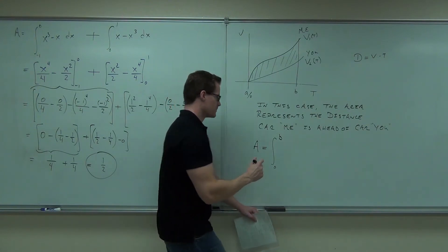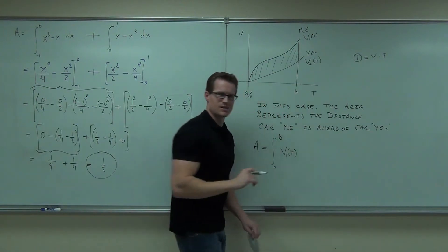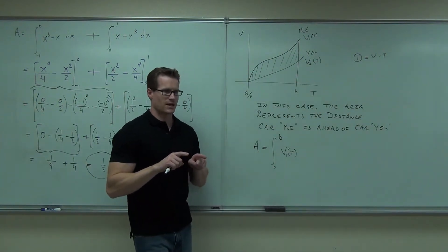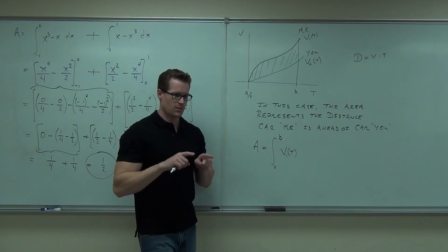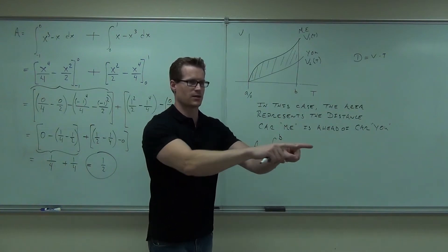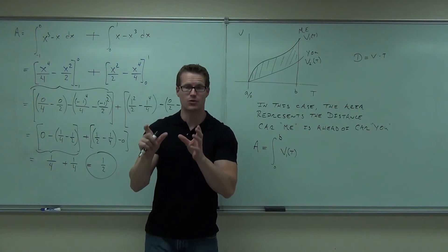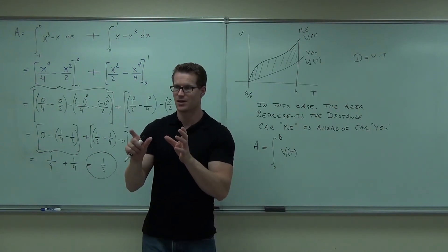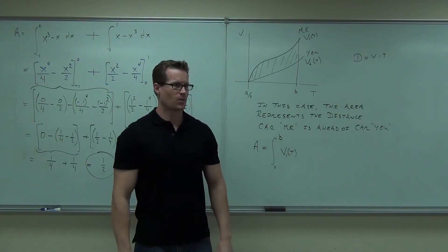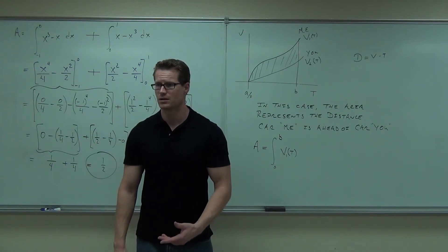This was a simplistic example. Sometimes cars go back and forth — they start off and you have an automatic and I have a stick shift, so probably I'm ahead of you. Then if we have very equal cars I'm going to shift and you're going to keep going, so we might go back and forth. You'd have to set up several integrals — every time we cross back and forth, that interval would be a different integral giving you the overall distance between the two cars.